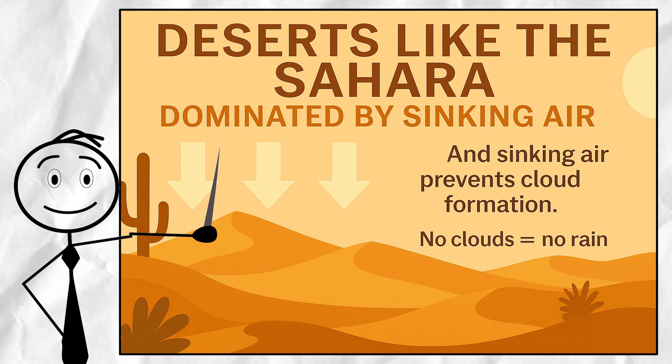In contrast, deserts like the Sahara are dominated by sinking air. And sinking air prevents cloud formation. No clouds equals no rain.